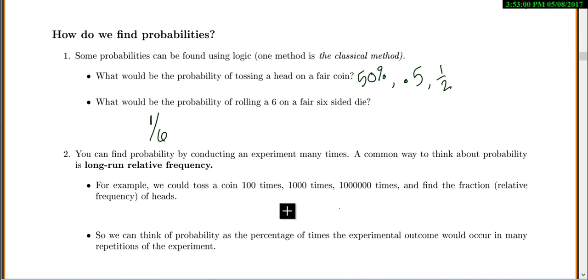Now how can we find probabilities? Some probabilities can be found using logic. One method is the classical method, which is an example like what would be the probability of tossing a head on a fair coin. On a fair coin, it's either heads or tails, and they're equally likely. So your probability of heads would be 50%, 0.5, or 1/2. You can write all of your probabilities as percentages, decimals, or fractions. Or if you want the probability of rolling a 6 on a fair 6-sided die, there are 6 options, but only one that I'm interested in, so the probability would be 1 out of 6.